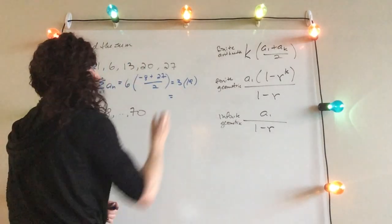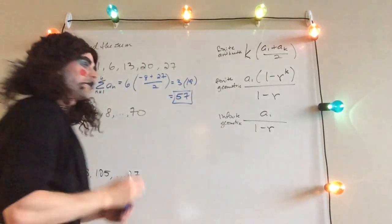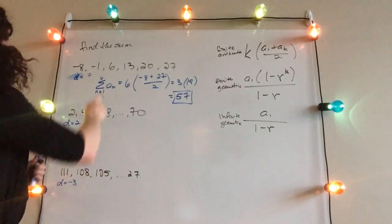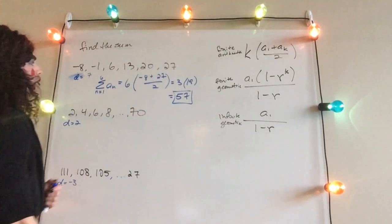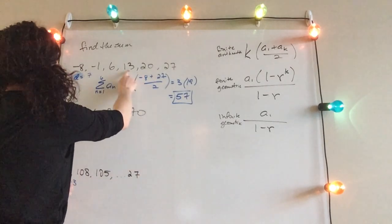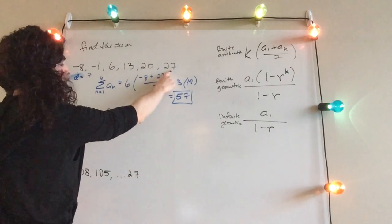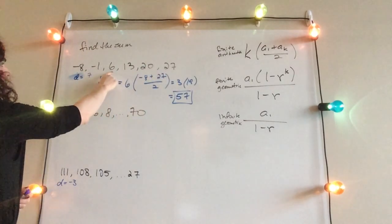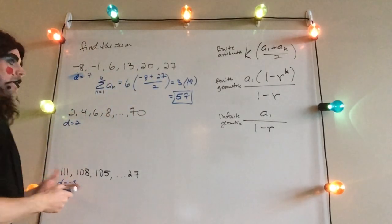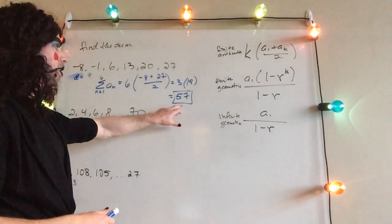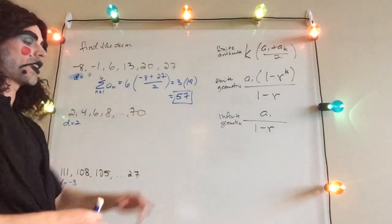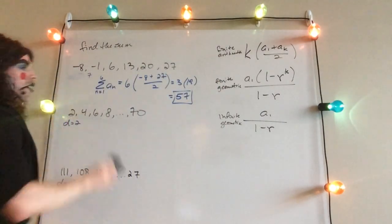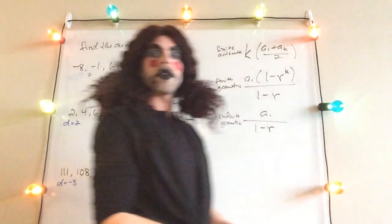We can verify by adding all terms directly: working through them gives us 57 as well, confirming the formula. Since we didn't prove the formula, we at least verified it with an example we could check directly.